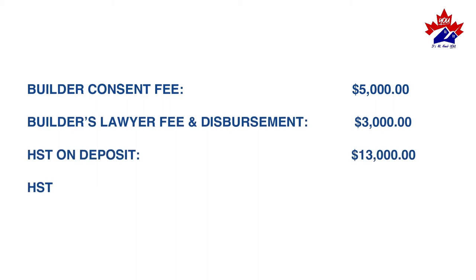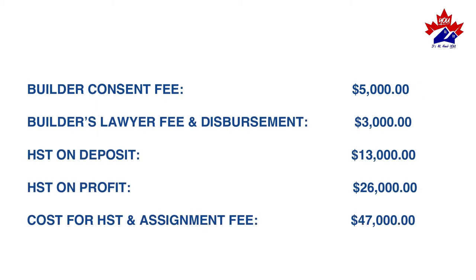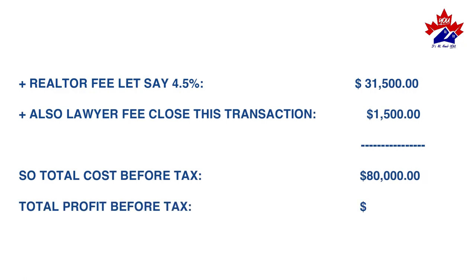Costs: builder consent fee $5,000; builder's lawyer fee and disbursement $3,000; HST on deposit $13,000; HST on profit $26,000. Total cost for HST and assignment fees: $47,000. Plus realtor fee at approximately 4.5%: $31,500. Plus lawyer fee to close this transaction: $1,500. So total cost before tax: $80,000. Total profit before tax: $120,000.